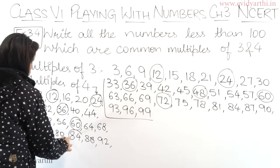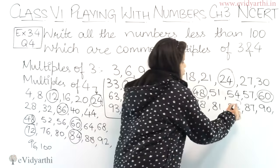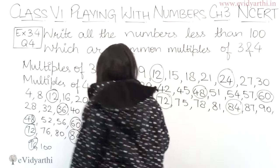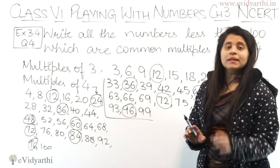Then we have 84. So 84 is in both. After that I have 96 common. So it's here also and here also. So these are all common multiples.